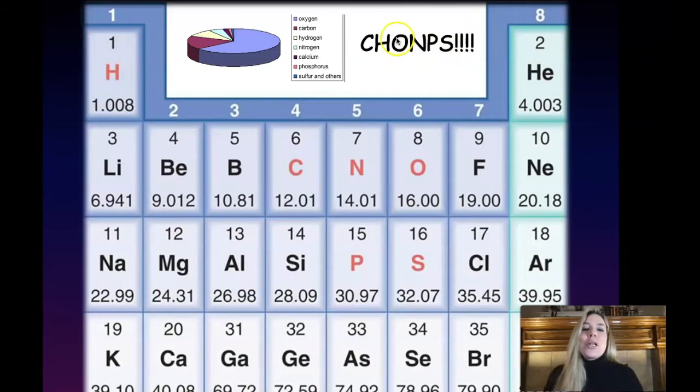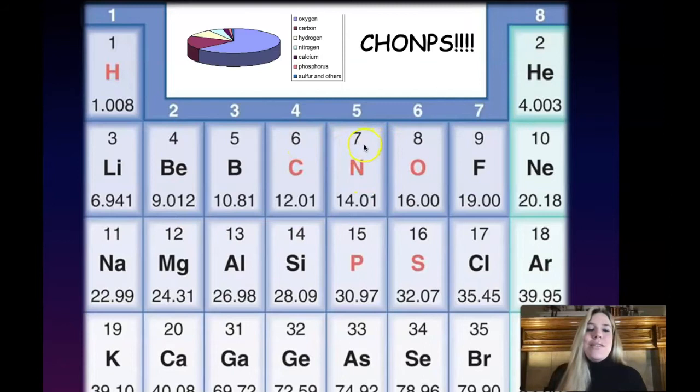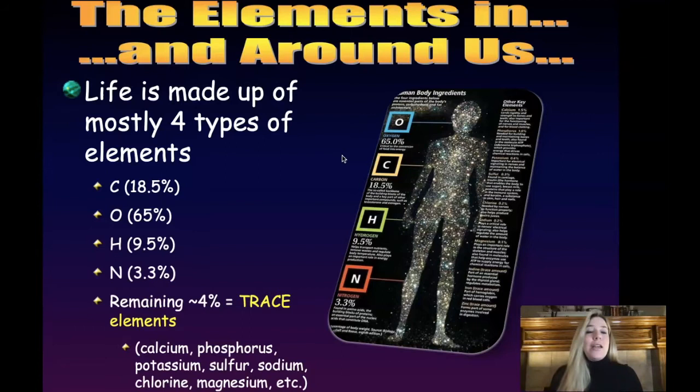Hydrogen is element number one of the periodic table, all the way on the left side. Carbon is element number six on the right side. Oxygen is element number eight on the right side. Nitrogen is sandwiched between carbon and oxygen at element number seven. Phosphorus is element number 15 and sulfur is element number 16. Those few elements make up the bulk of everything that composes the body of humans and every other organism on earth.